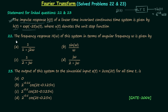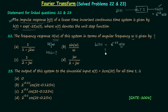The first question asks for the frequency response H(ω) of this system in terms of angular frequency ω. To calculate the frequency response H(jω), we need the transfer function H(s), which we can calculate by using the Laplace transform on h(t). Let's quickly perform the Laplace transform on h(t) = e^(-2t) u(t). Since we are having u(t), we are dealing with the unilateral Laplace transform.